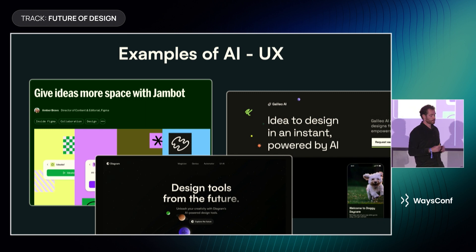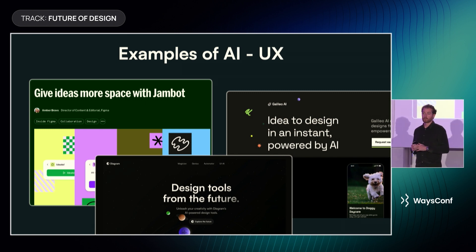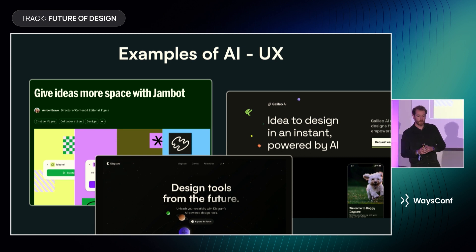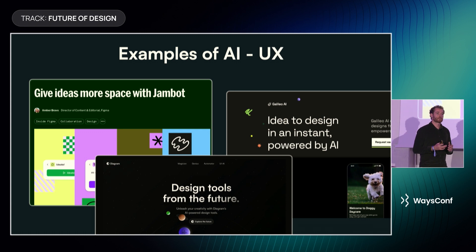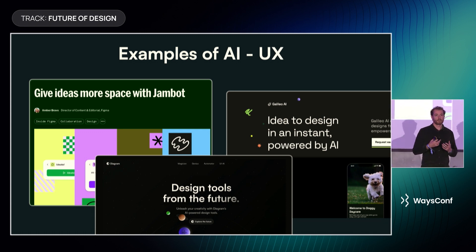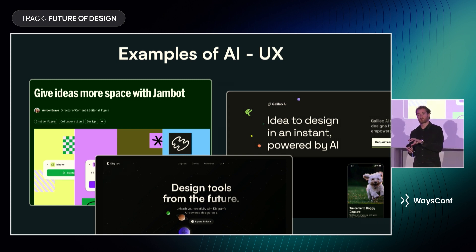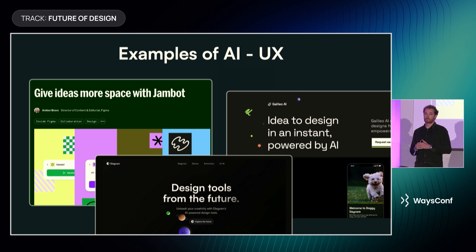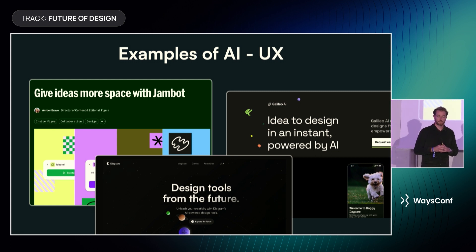On the left, we have JamBot, a FigJam plugin developed by the folks at Figma. It's essentially a companion to your whiteboarding session. When you have post-its from an ideation session, for example, it can cluster and summarise them, and it can even create new ideas based on your data.